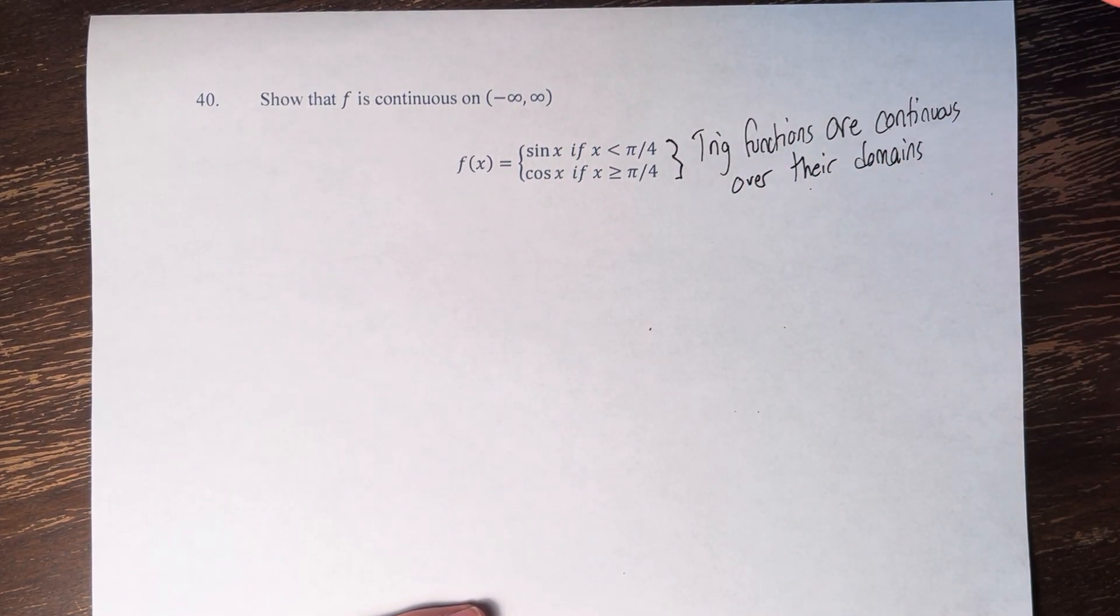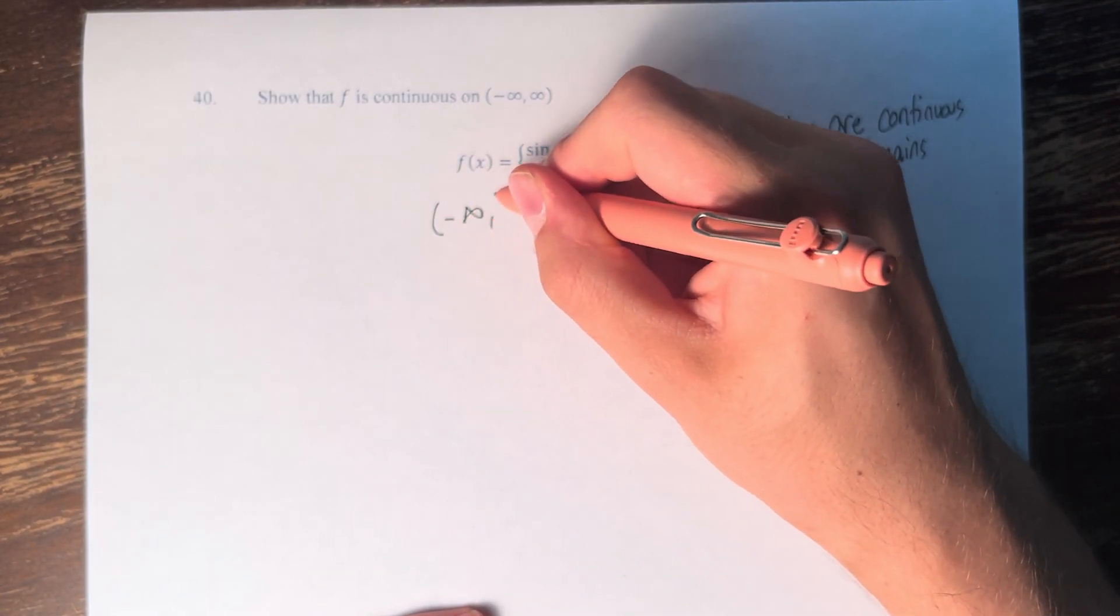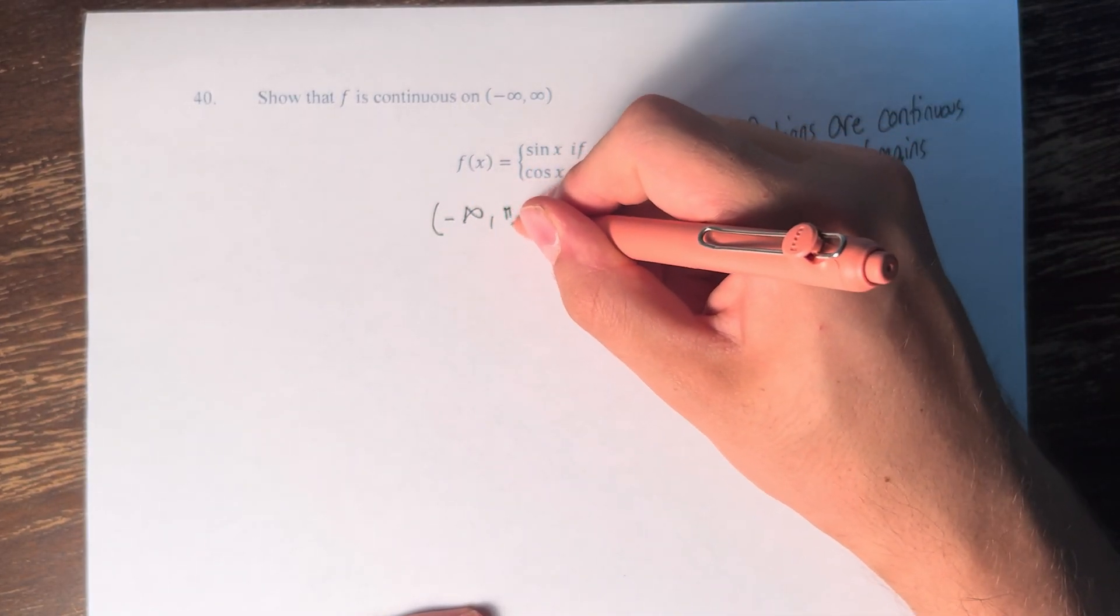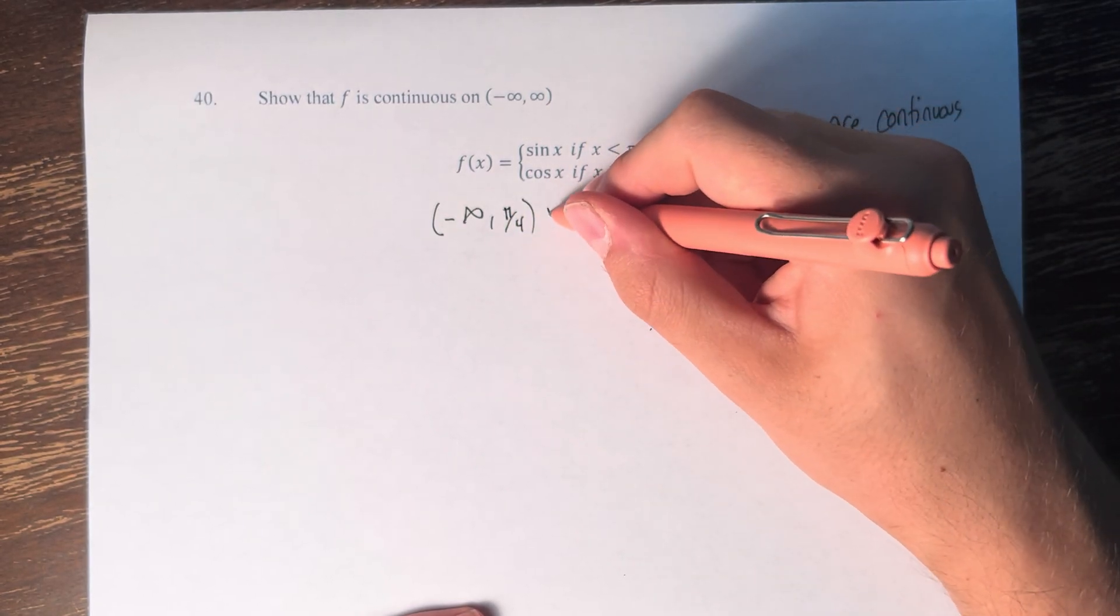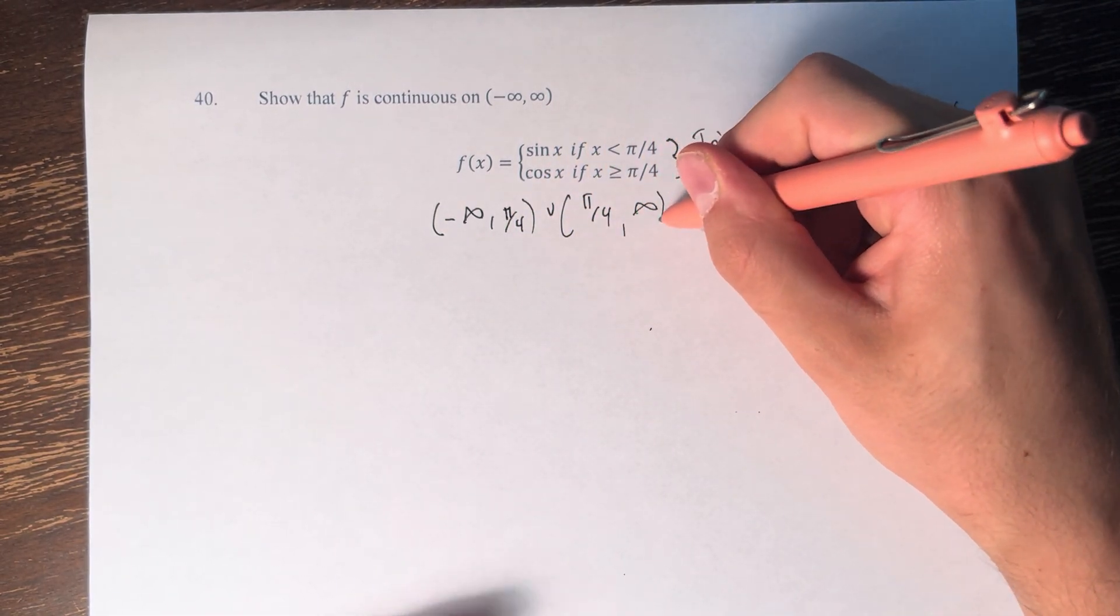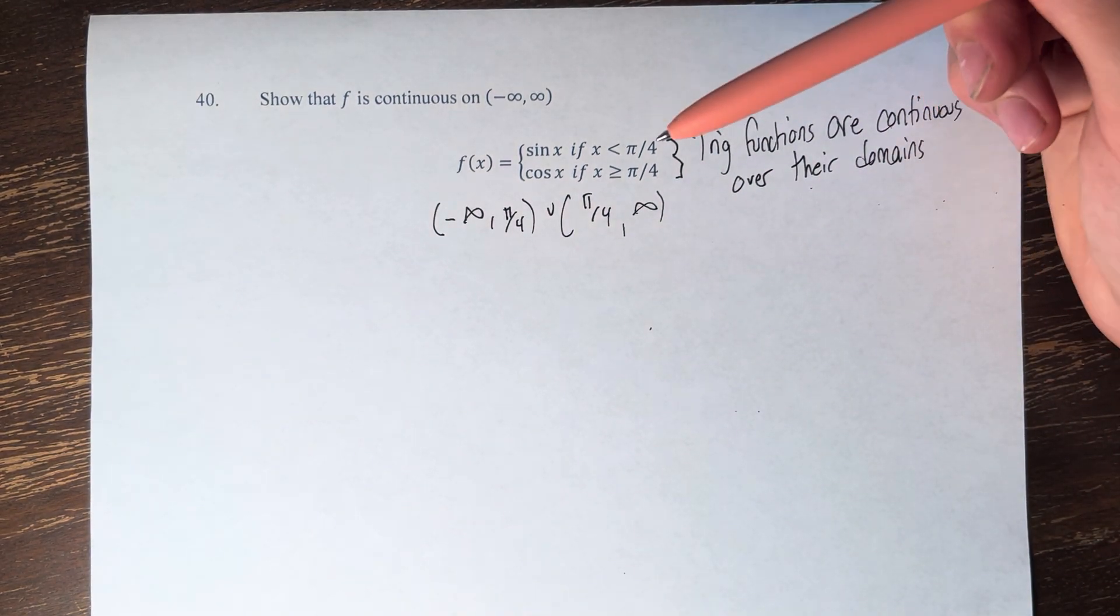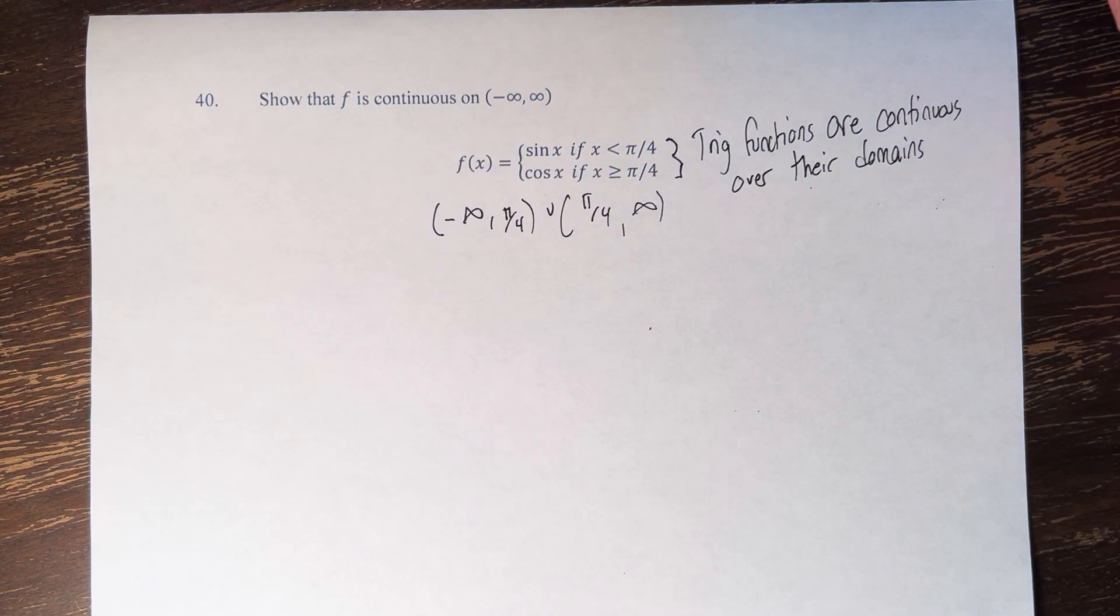So we know that the function f of x is continuous if x is less than pi over 4, from negative infinity to pi over 4, and from pi over 4 to infinity for cosine of x. The only thing we have to test is the point at which it switches from sine to cosine, where x equals pi over 4.